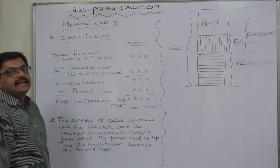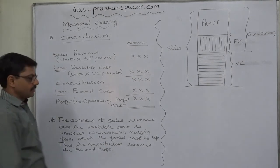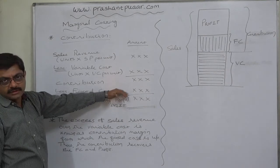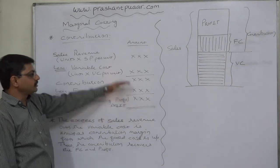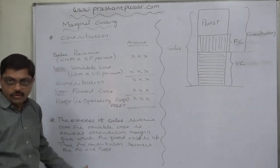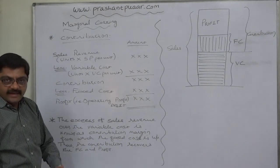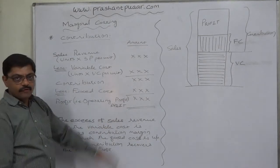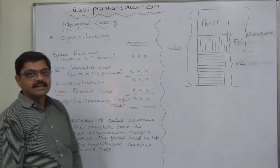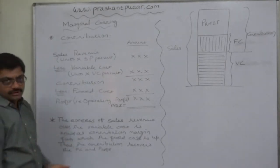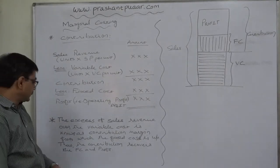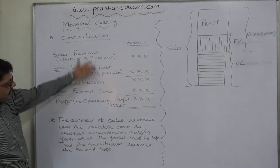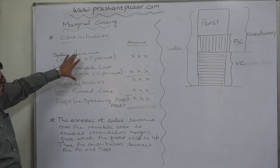From the contribution margin, we write off our fixed cost, and the remaining amount — the excess of contribution over fixed cost — is known as profit. In financial accounting terms, this is the profit before interest and tax, as we do not consider interest and taxes as part of cost according to costing principles. The concept of contribution can be seen from two angles: first, excess of sales revenue over variable cost is contribution.